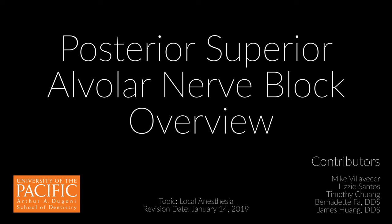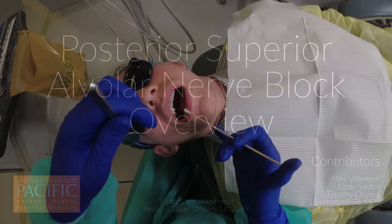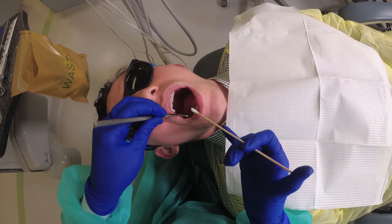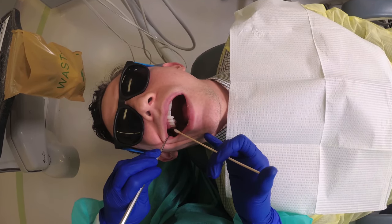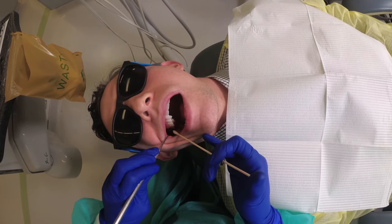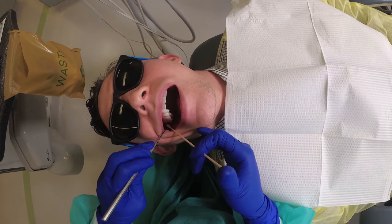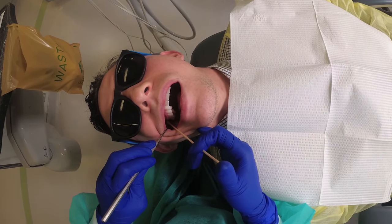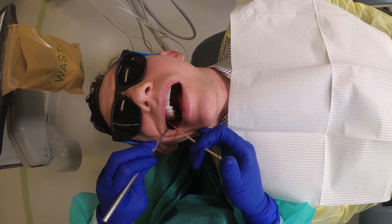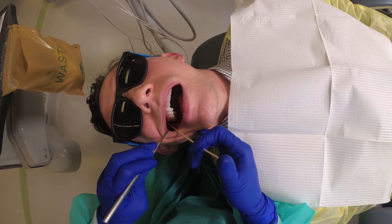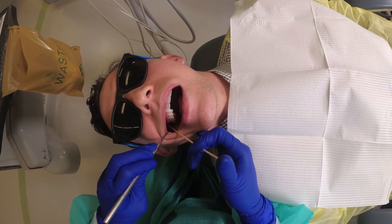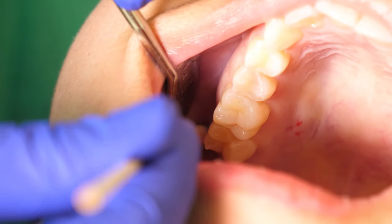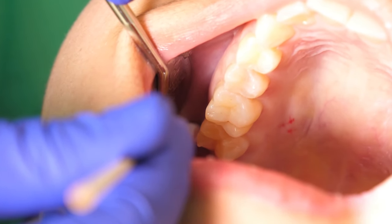Posterior Superior Alveolar, PSA. This is a visual walkthrough of the Posterior Superior Alveolar Dental Injection. The PSA injection is a maxillary block injection used to anesthetize all the maxillary molars on the quadrant where the anesthesia is placed, except for the mesiobuccal cusp of the maxillary first molar.